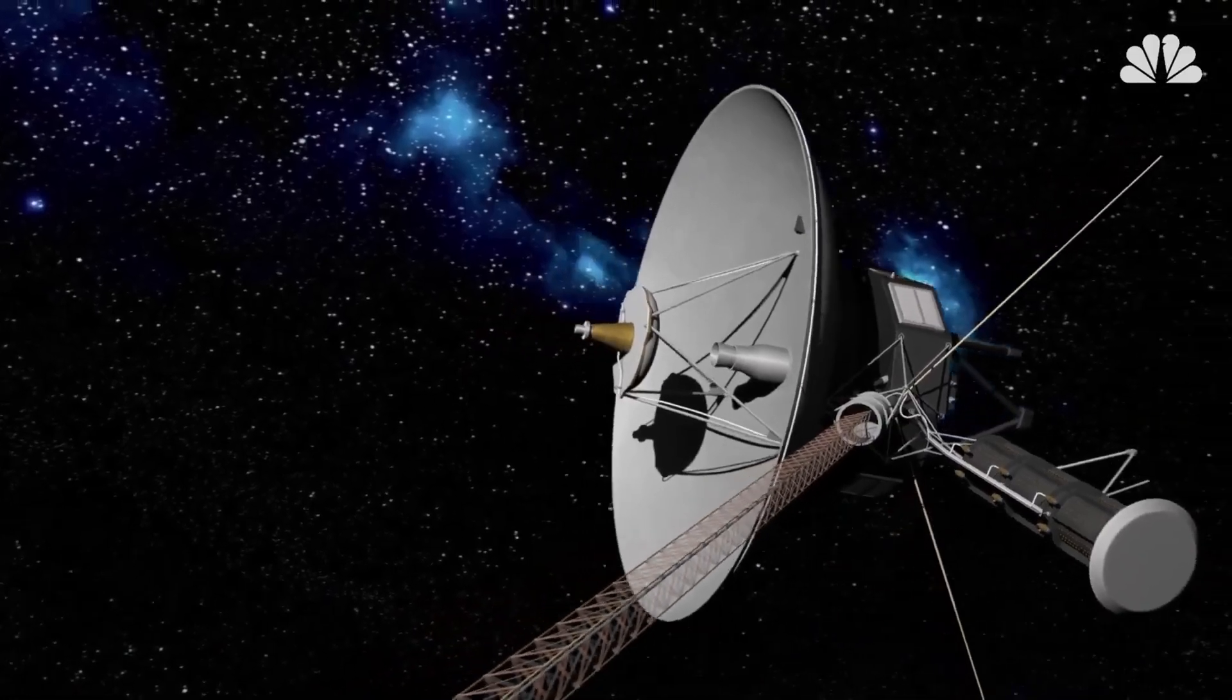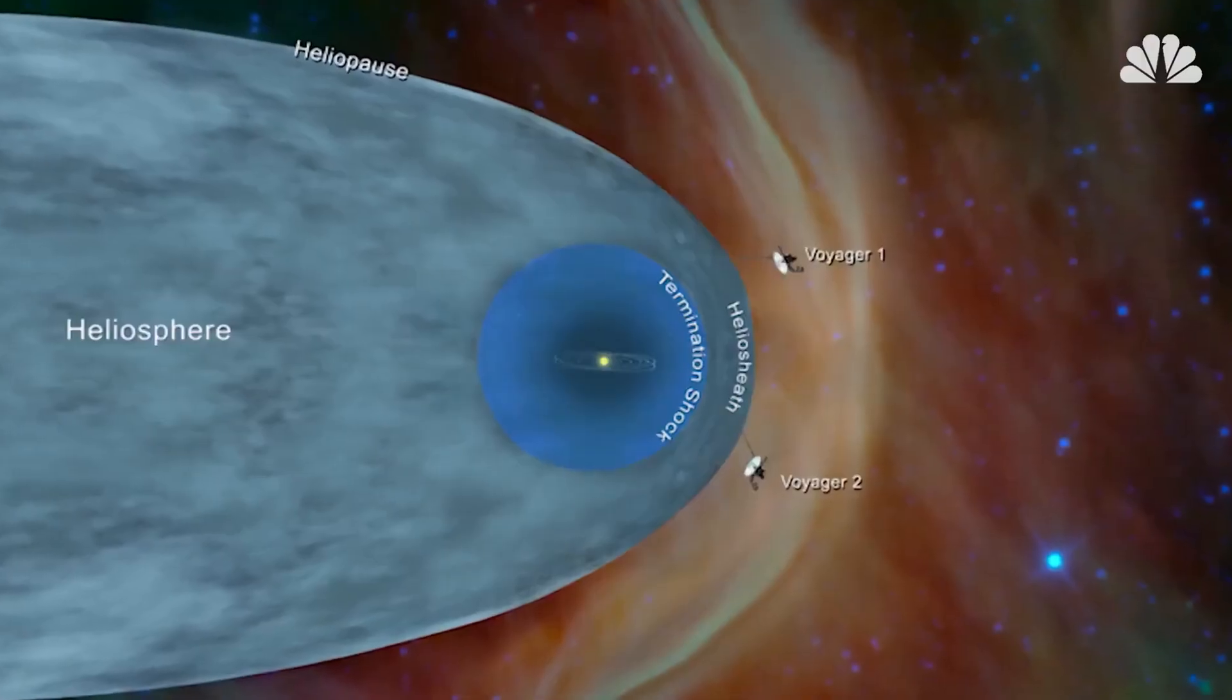NASA says it has heard from the Voyager 2 spacecraft, which right now is in interstellar space. Voyager 2, launched by NASA in August 1977, is no ordinary spacecraft.